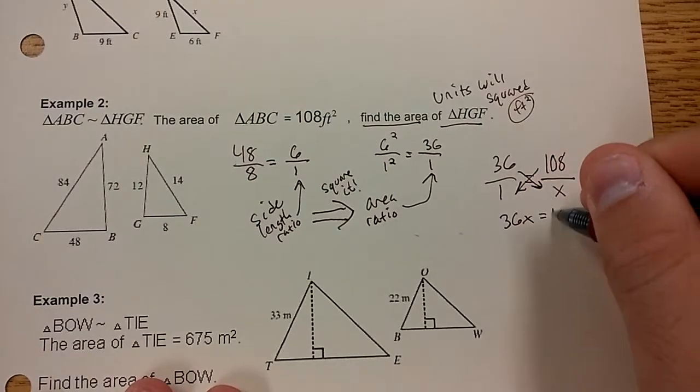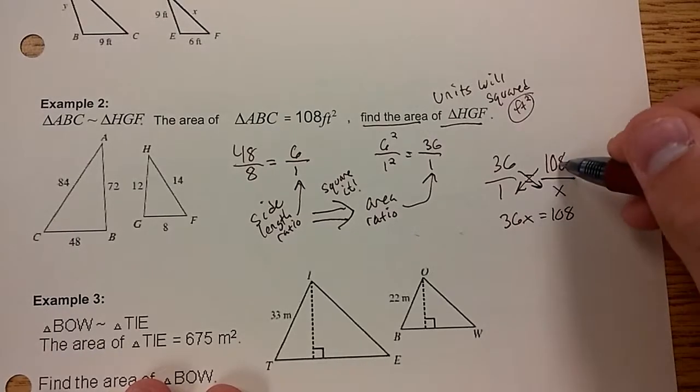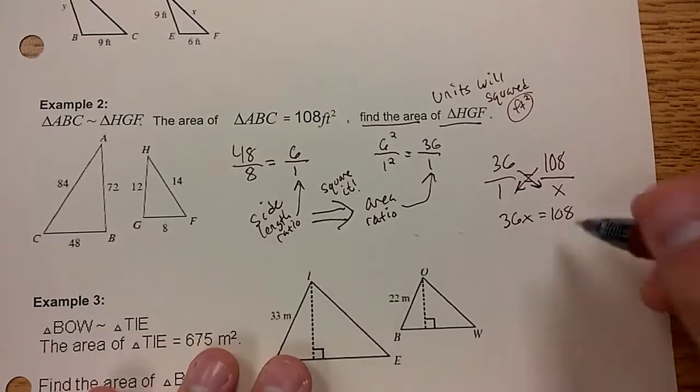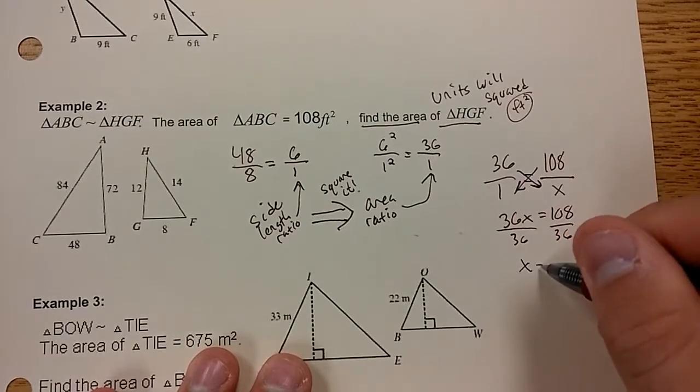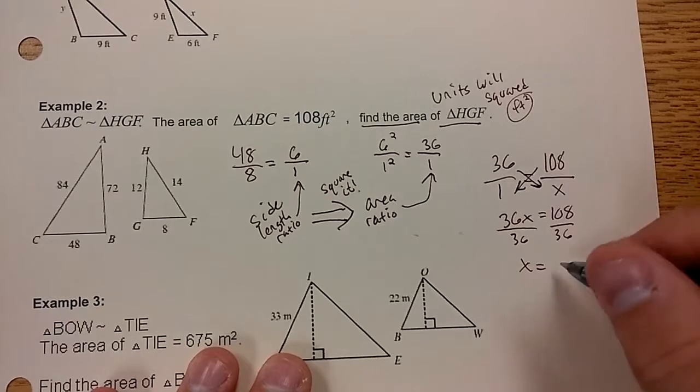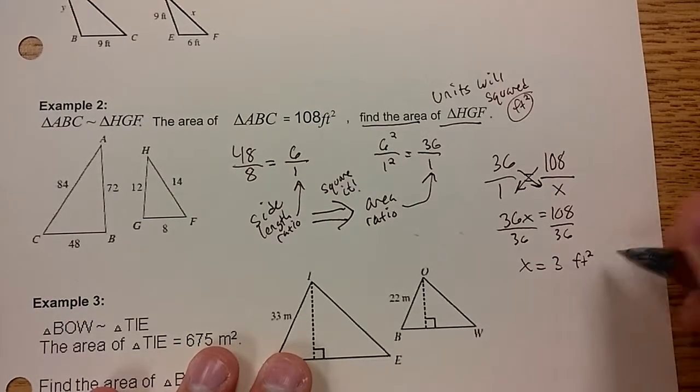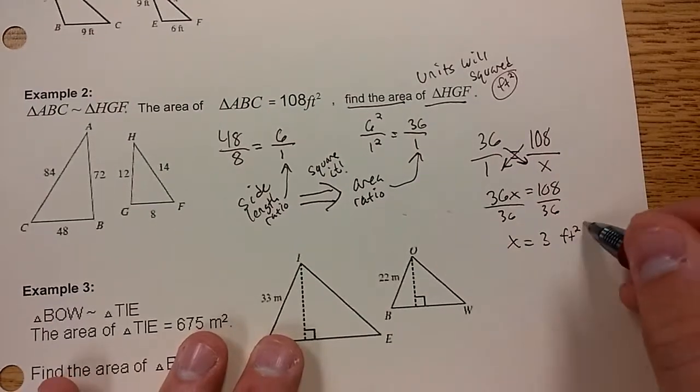36X equals 108. 36 times X, 108 times 1. Last step, divide both sides by 36. 108 divided by 36 is going to be 3 square feet. The area of the smaller triangle is 3 square feet.